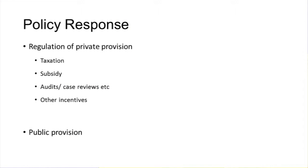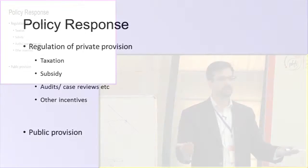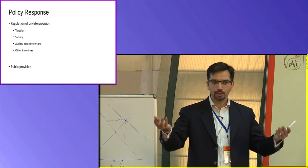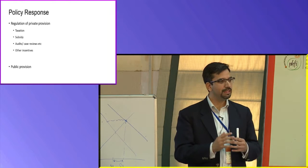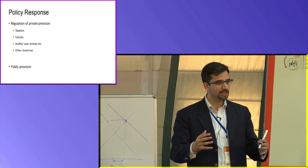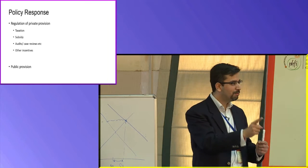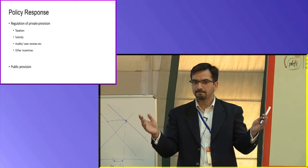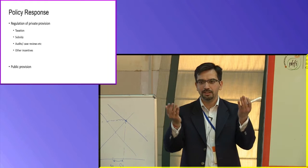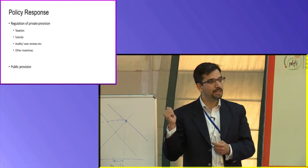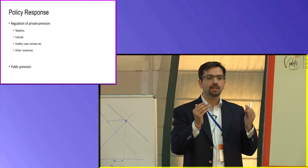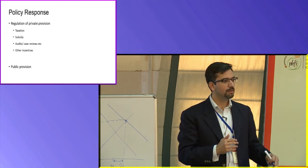So these are things that we have already discussed. One is you regulate the private sector through taxation, subsidy, or audits. Or the other is that the government steps in to say no, we will provide for everything — we will set up our own hospitals and health centers. One way is to let the market allocate resources and the government becomes a kind of policeman-steward to ensure the market functions efficiently — no supplier-induced demand, no information asymmetry, trying to bridge heterogeneity by ensuring everybody provides the same quality of care. Either the government does that, or the government says that's a big job and instead directly provides healthcare services.